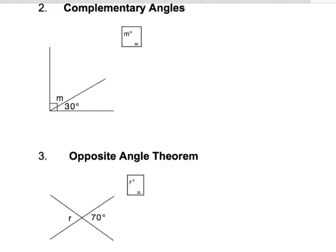Next, we're looking at complementary angles. We have angle M and angle 30 — what do they form? A 90 degree angle. And what's a 90 degree angle? It's a right angle.